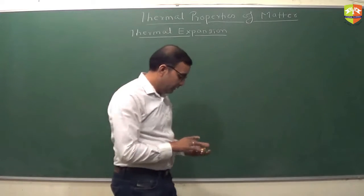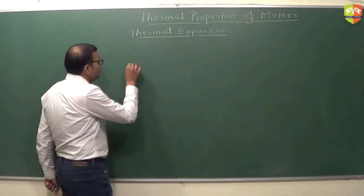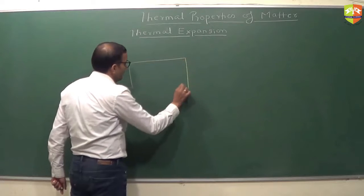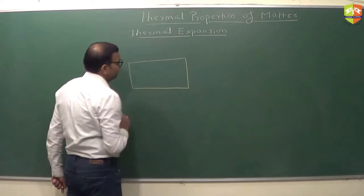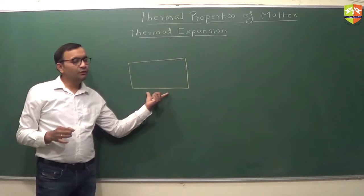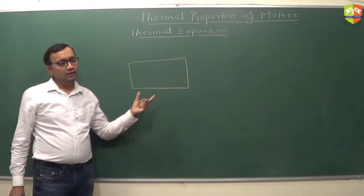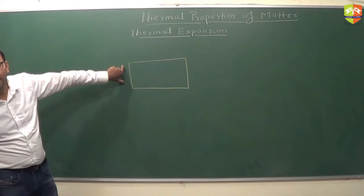Now let me tell you something else. Suppose you have a plane. This is a plane. So L equals L0 alpha, delta L equals L0 alpha delta T, delta P is B0 alpha delta T.